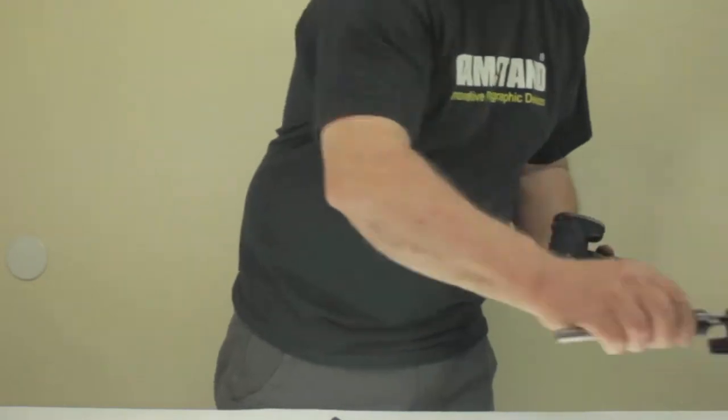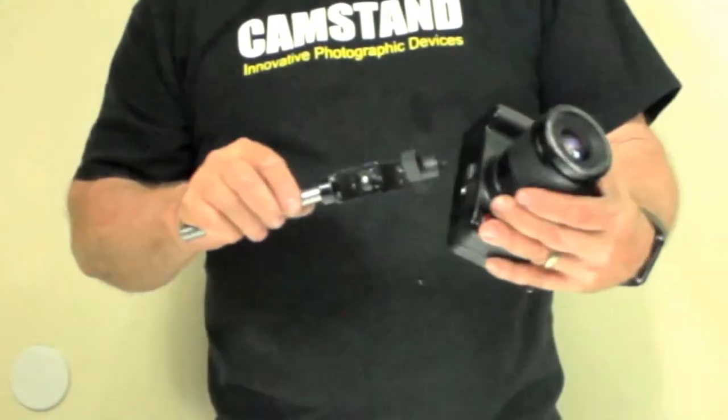To assemble your CamStand 5 Pro, you first twist the camera mount into the bottom of the camera.